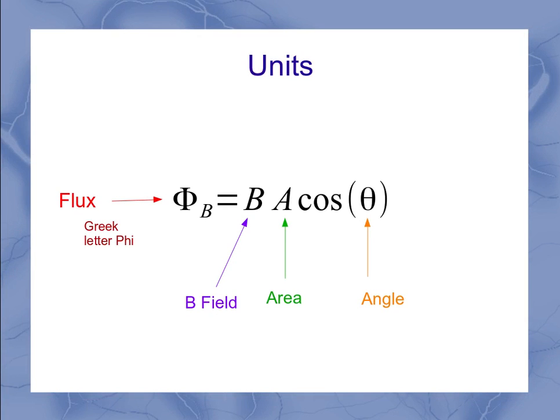Now, if I look at the units real quick: B field is measured in Tesla, area is measured in meters squared, and angle could be measured in degrees or radians, but once I take the cosine of the angle, it's not going to contribute any units.